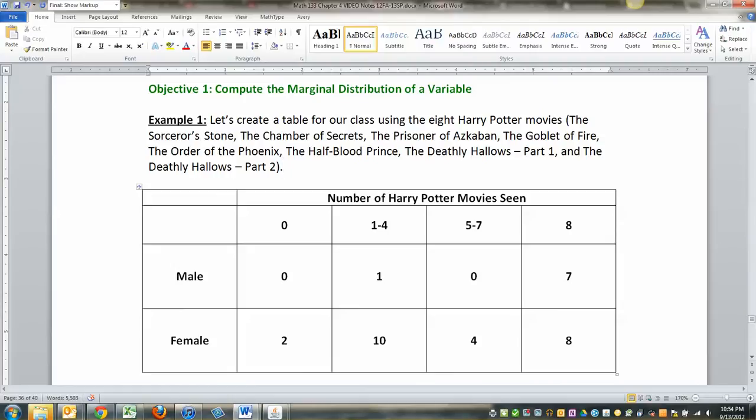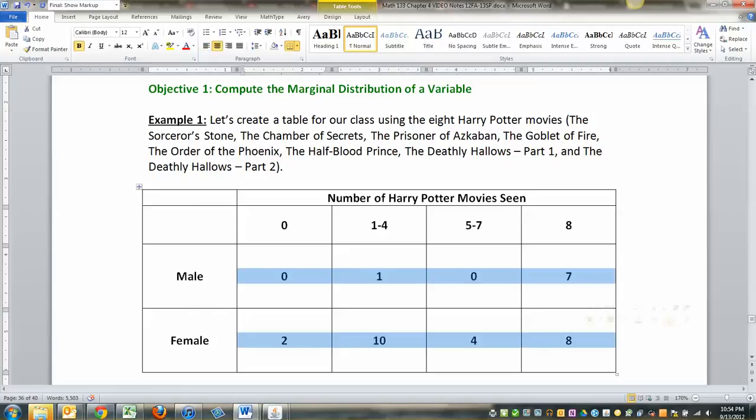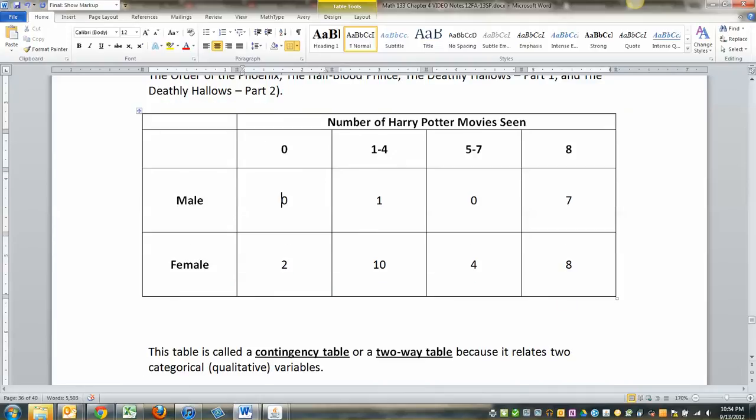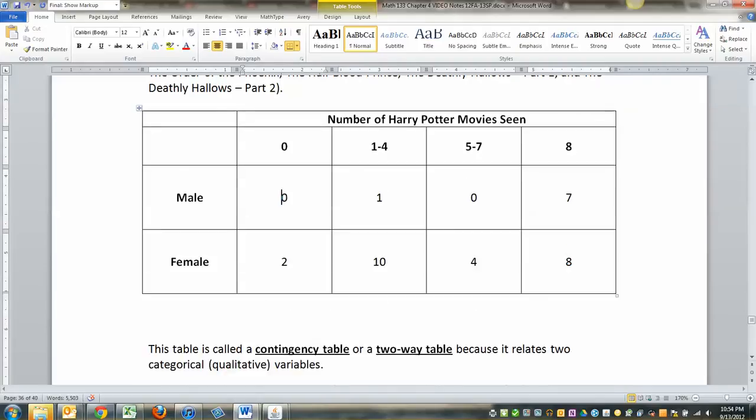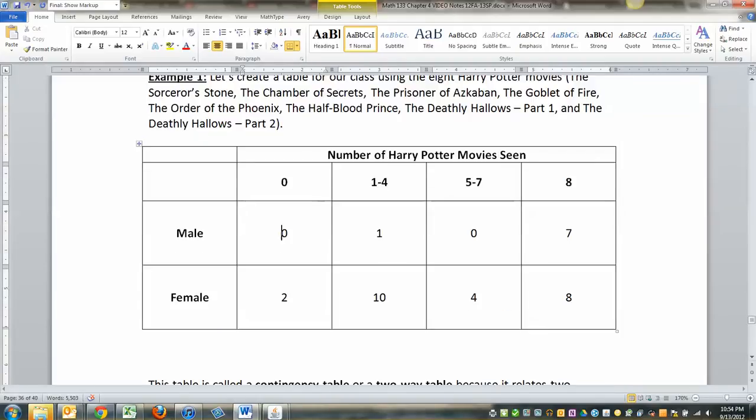So what I chose was the number of Harry Potter movies that people have seen, just for the heck of it. And there are the numbers, right? There's eight movies total. So I asked a class, obviously you wouldn't have these numbers going in. I had a classroom full of students and these were the numbers that they came up with. I write them all down. This is called a contingency table or a two-way table because it has a row variable and a column variable.